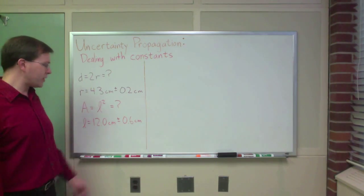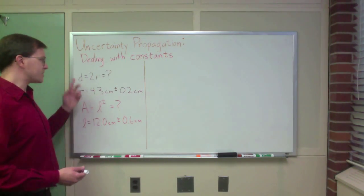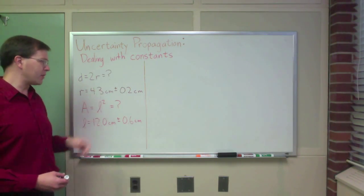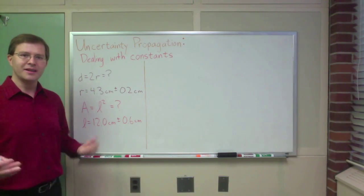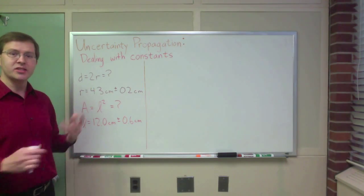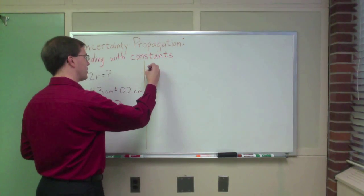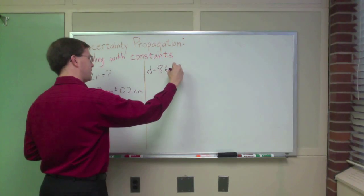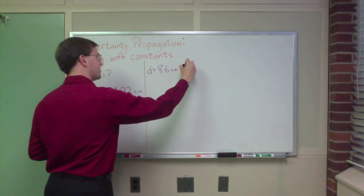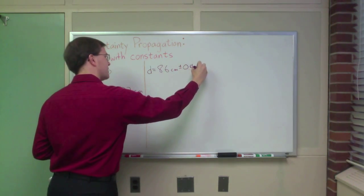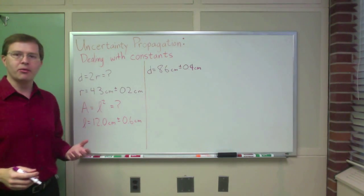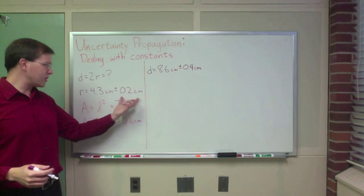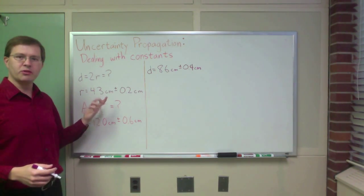Well, if I want to do that, clearly I just multiply by 2 to get the diameter, but what do I do with that uncertainty? It turns out the rule is really easy. You just double it. So my diameter is equal to 8.6 centimeters plus or minus 0.4 centimeters. Just double the uncertainty when you double the base quantity.